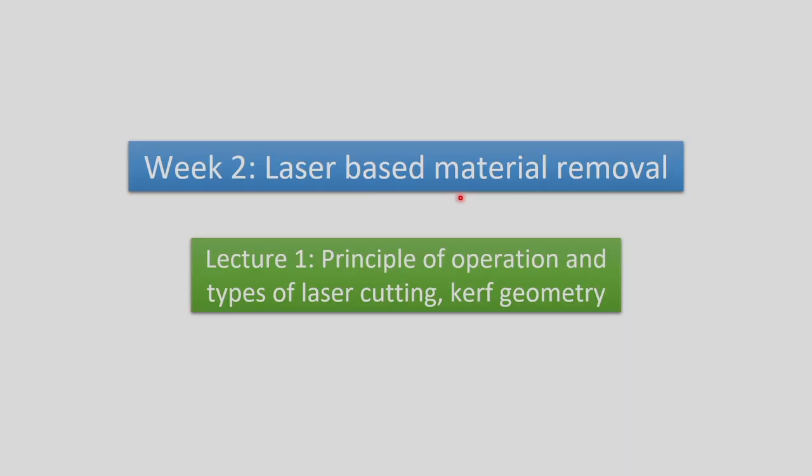We have also seen the construction of a typical laser and the various cavity designs. With these fundamentals of laser, let us begin our journey to know how lasers are applied in the manufacturing industry. In this week we will be focusing on material removal processes — how lasers are used to remove excess material or specific material from the work part, so that we can generate our desired cavities, shapes, and features for the intended application in manufacturing.